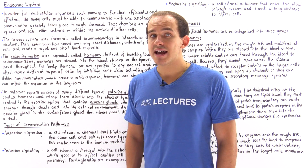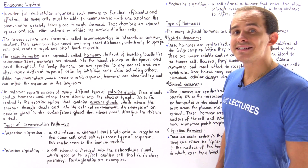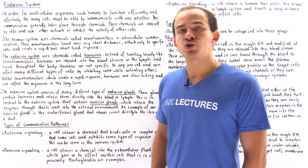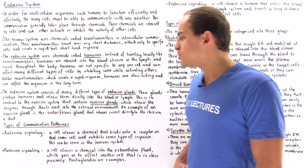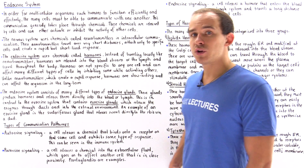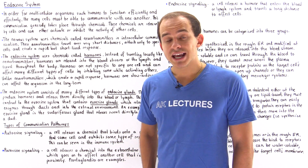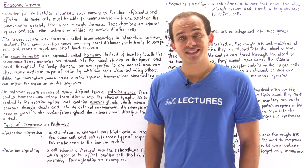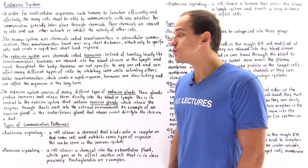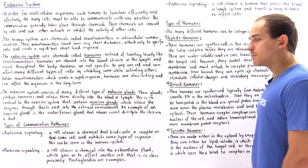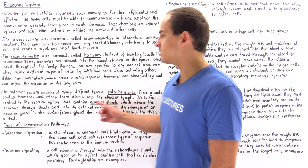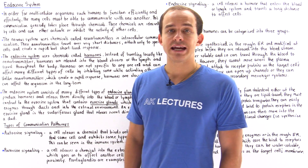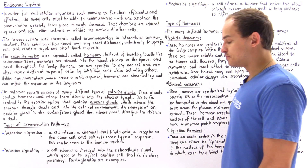One example of an exocrine gland is the sweat gland, also known as the pseudoriferous gland. The pseudoriferous gland creates sweat, releases it through a duct and onto our skin — into the external environment. So exocrine glands release into ducts, while endocrine glands are part of the endocrine system and release into the bloodstream.